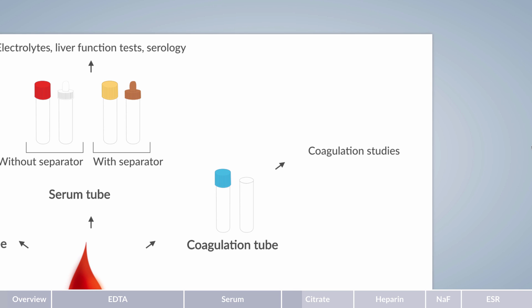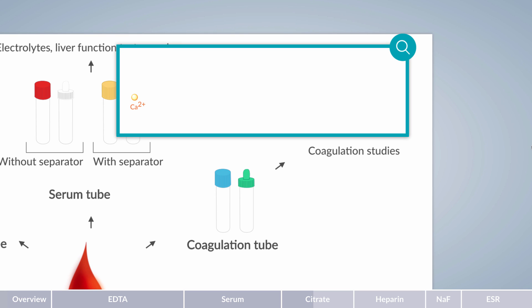Coagulation tubes have a light blue cap in accordance with the international standard and a green cap in accordance with the European standard. Temporary anticoagulation in the coagulation tube functions similar to that in the EDTA tube. The only difference is that calcium is removed using citrate, which binds less strongly than EDTA. The calcium citrate salt formed in blood in the collection tube, following the addition of citrate, has a clearly defined stoichiometry.